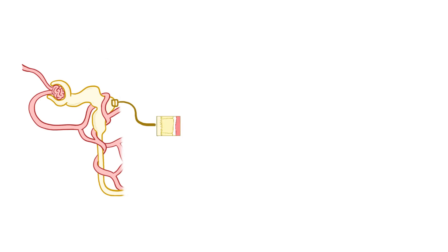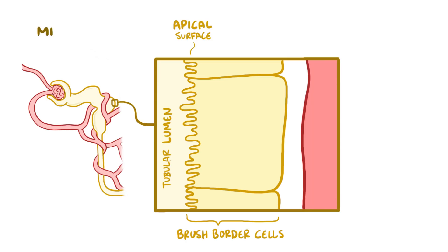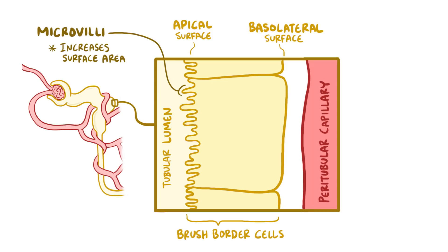The proximal tubule is lined by brush border cells which have two surfaces. One is the apical surface that faces the tubular lumen and is lined with microvilli. Microvilli are tiny little projections that increase the cell's surface area to help with solute reabsorption. The other is the basolateral surface, which faces the paratubular capillaries, which run alongside the nephron.